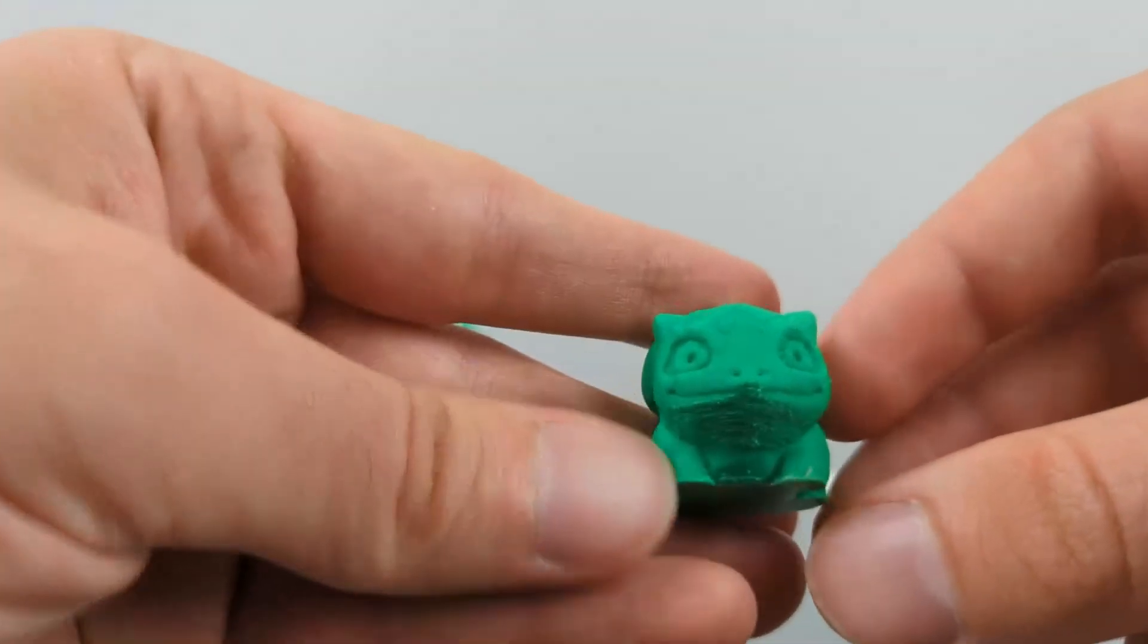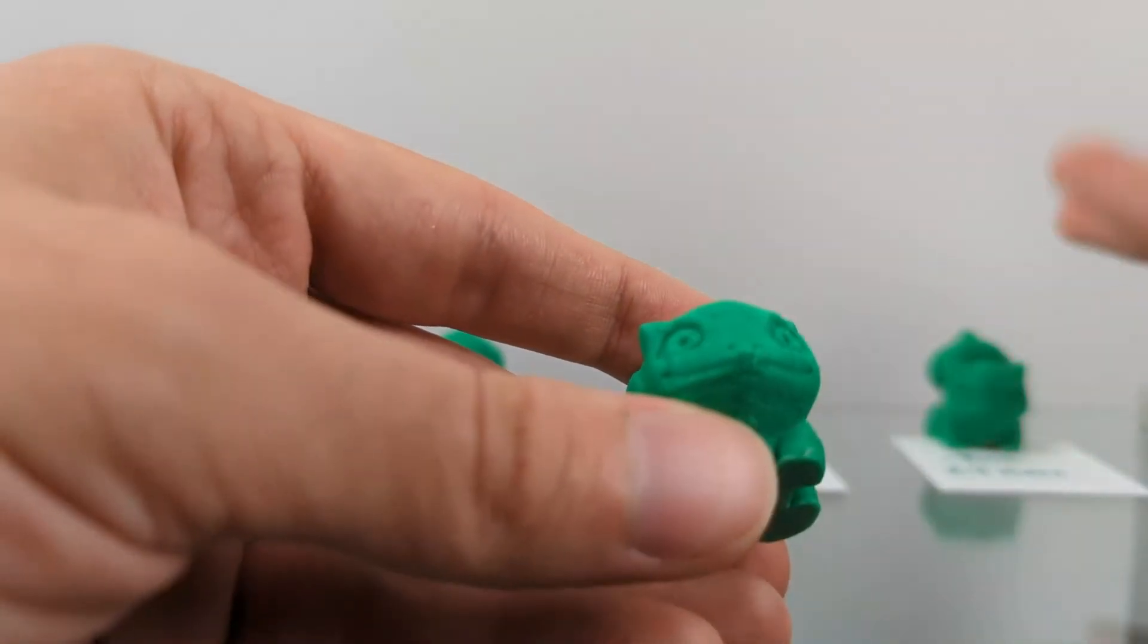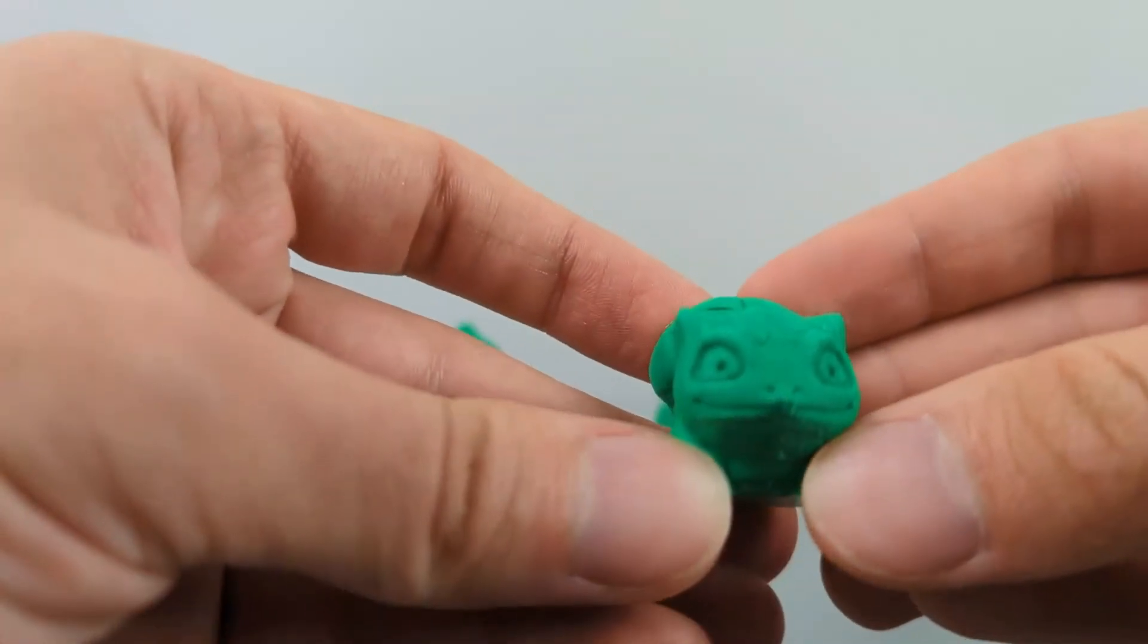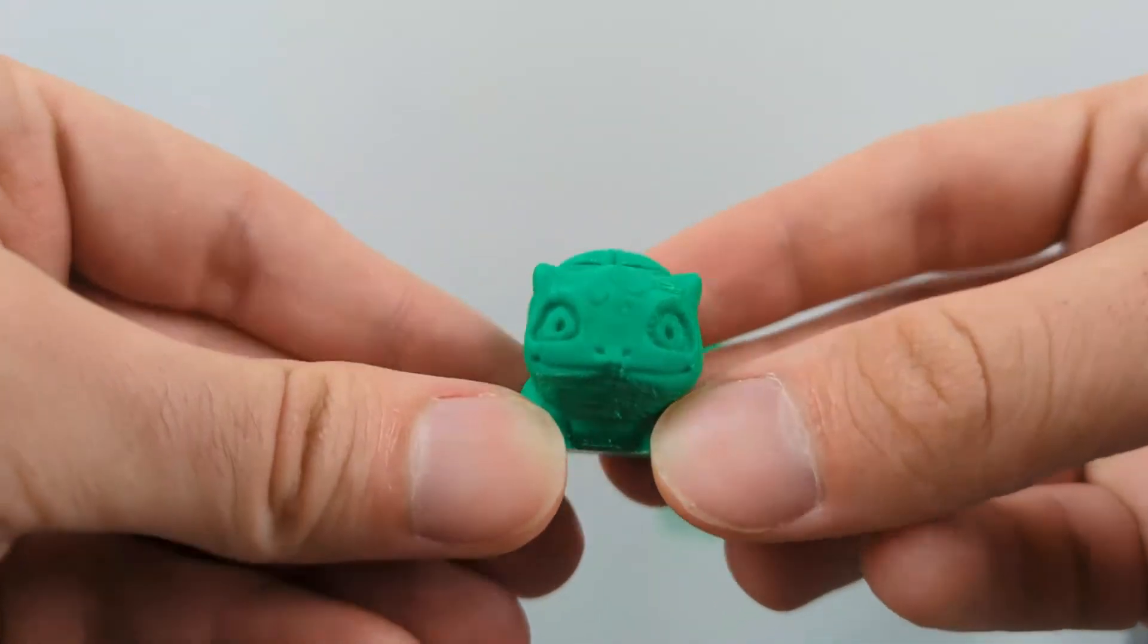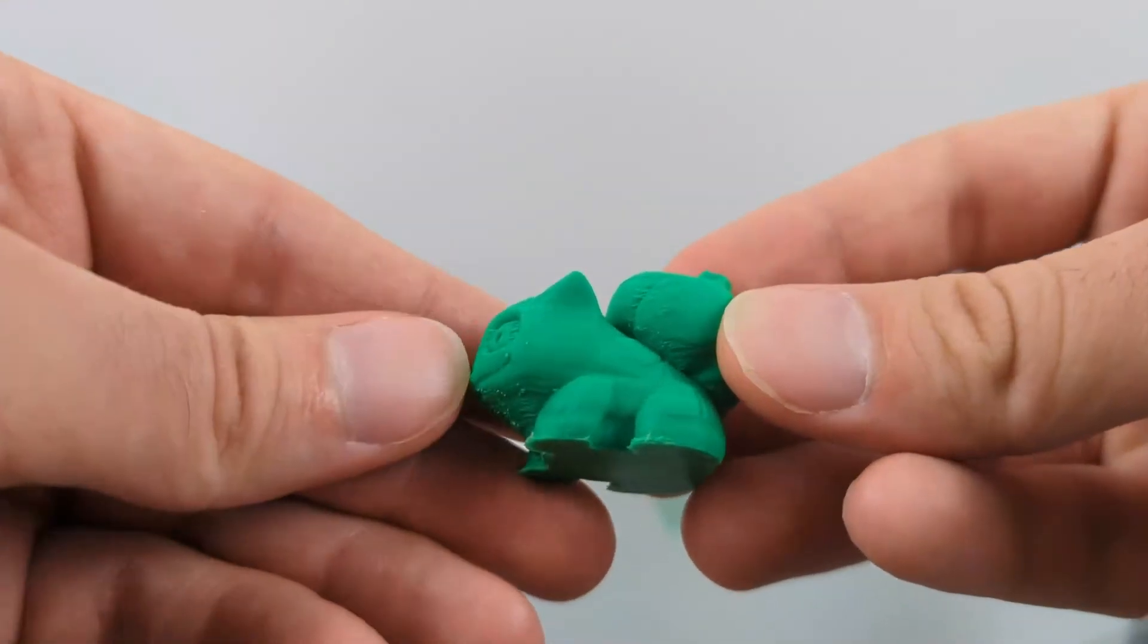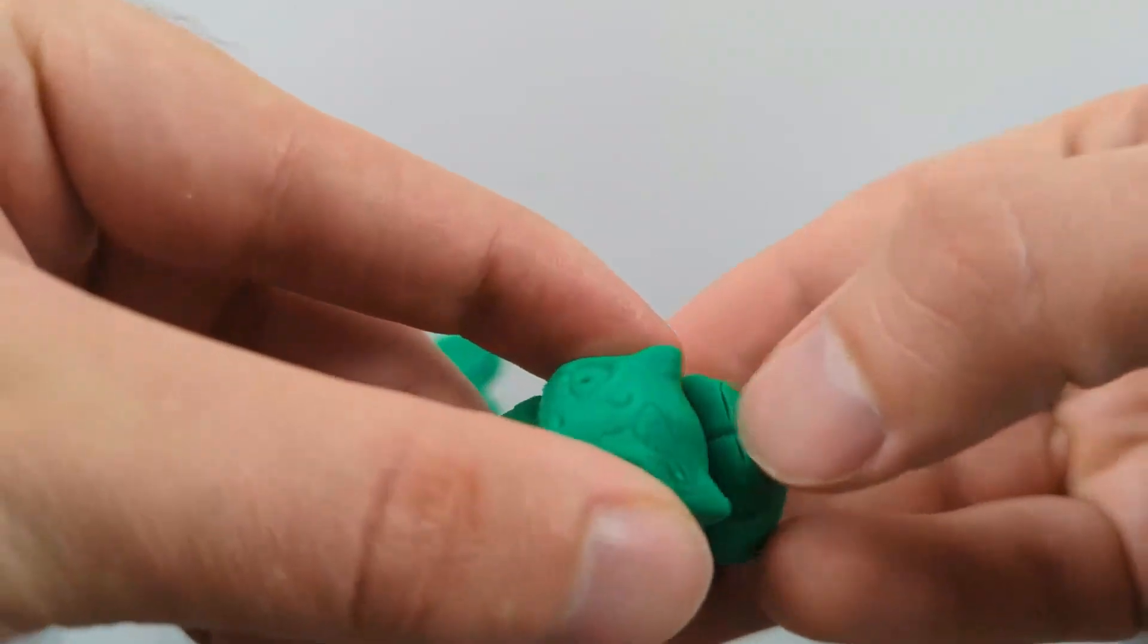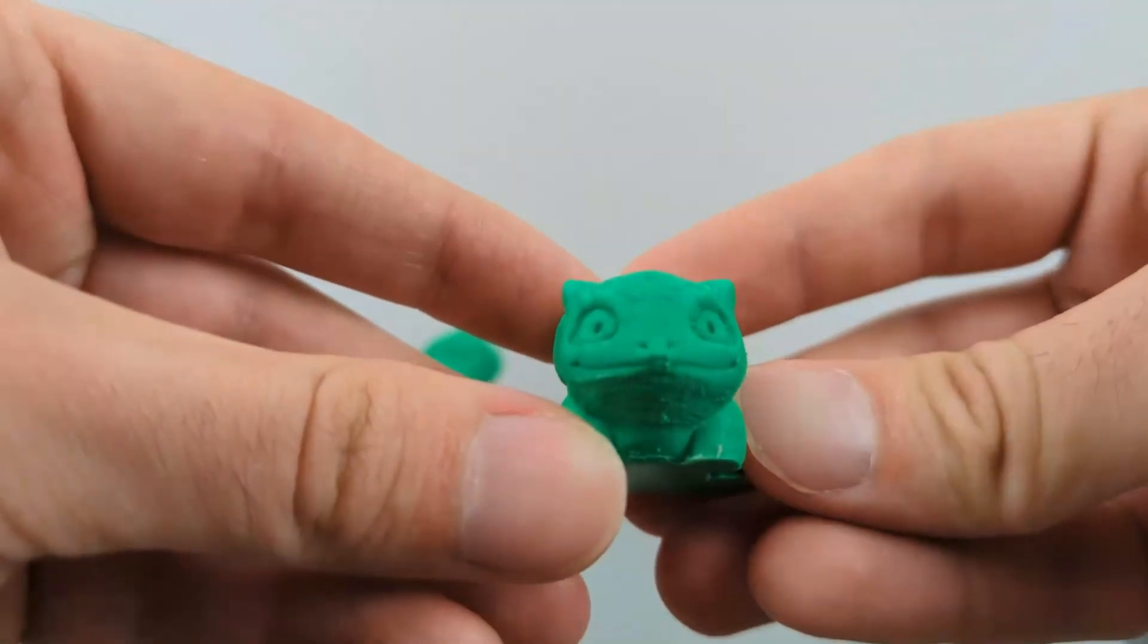So I will preface this by saying I have a super cheap 0.2 millimeter nozzle. It took me a long time even to print this thing, and as you can see it still has a defect right here. I could probably pop that open if I wanted, but I think it will at least give us a baseline. Look at the indention in his eyes and his markings on his face.